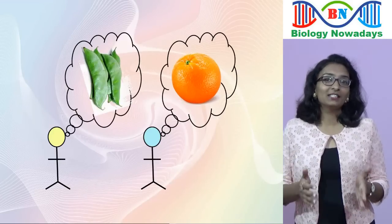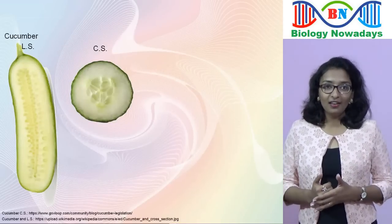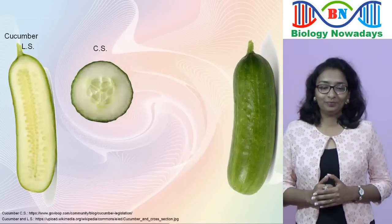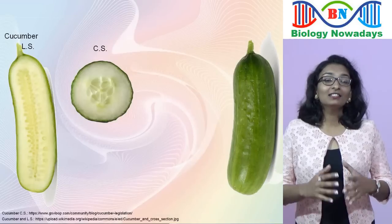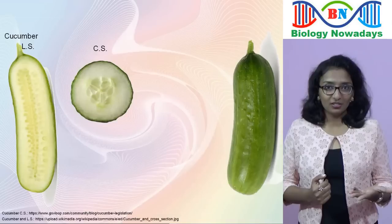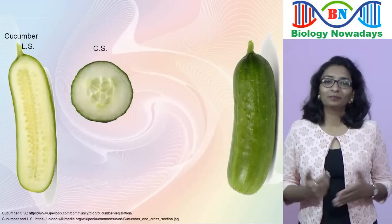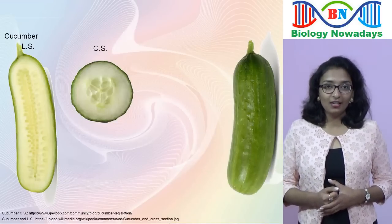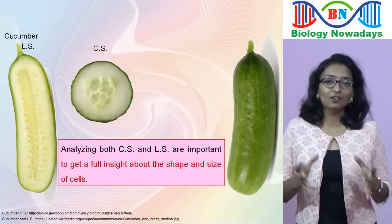But when we show them both sections — transverse as well as longitudinal — then they can understand the actual shape of the cucumber. Similar is the case with cells. Cells are of different shapes; some have the shape of an orange, some others may have the shape of a cucumber and so on. Unless we have both the transverse and longitudinal sections, we cannot have a full insight about the shape and size of cells.